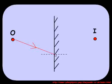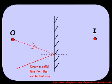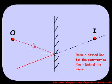Label it I. Now, place your ruler so that you can draw a line from the image point through the point where the incident ray hits the mirror. In front of the mirror line, draw a solid line for the reflected ray and behind the mirror, draw a dashed construction line that passes through the image point.